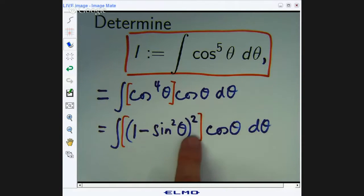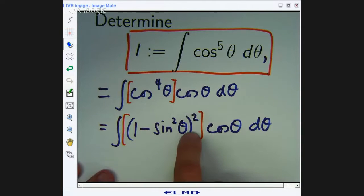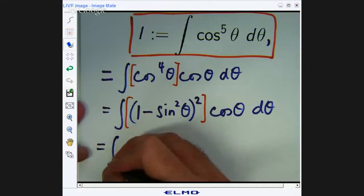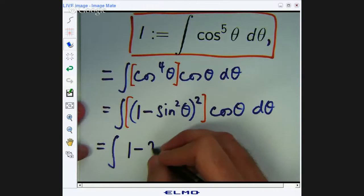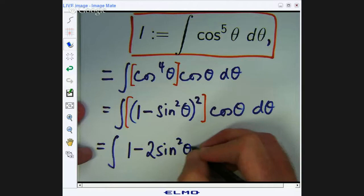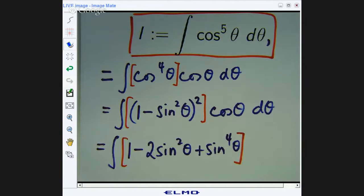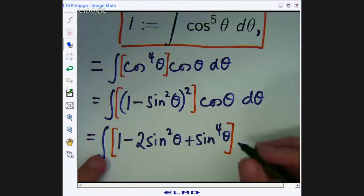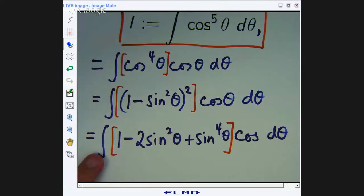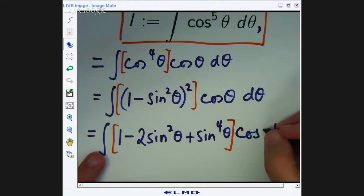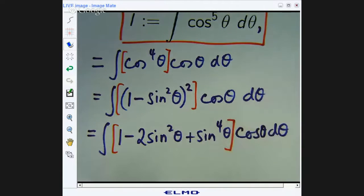If I expand this squared symbol now, I'll get one minus two sine squared plus sine to the power four. I'm going to do that, and then I'm going to sort of have three parts to my integral. So where am I now? Well, don't let me forget that d theta over there.